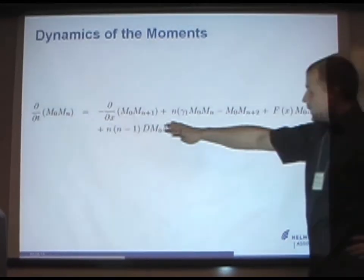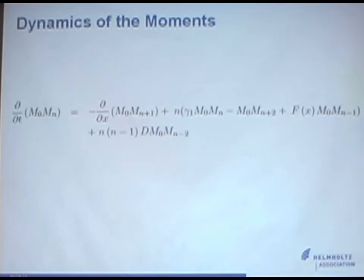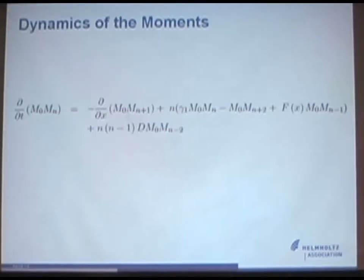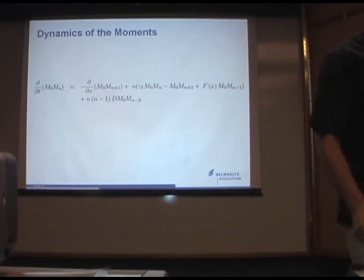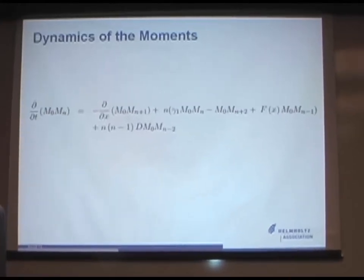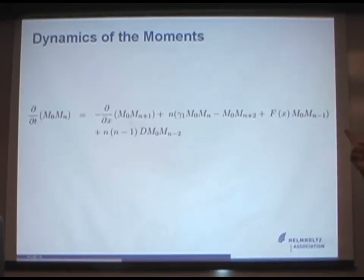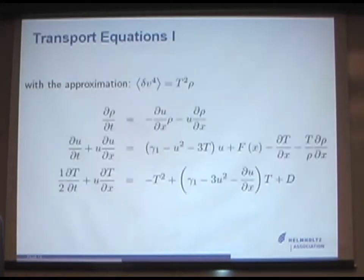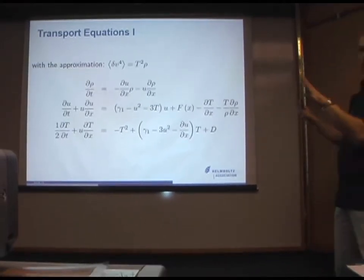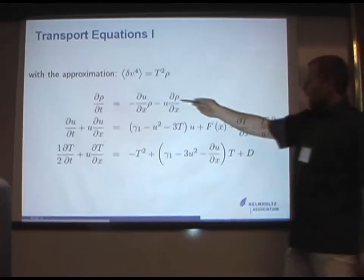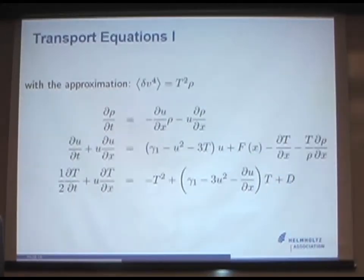So then we end up with an equation with a recursive formula for the dynamics of the moments. Now we have infinitely many, right? And if you want to be precise, actually, you have to write down infinitely many. If you cut this series, you will make a mistake. The question is, how big is this mistake? Let us take the Gaussian approximation for the fourth central moment, and for the lower one, we take the real non-linear approximation right here. So we end up with three component transport equations.